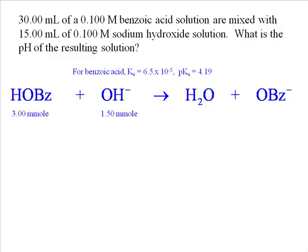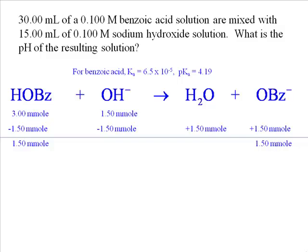If we mix these two things together, the sodium hydroxide is our limiting reactant, so it is completely consumed. It takes with it the exact same amount of benzoic acid, since it's a one-to-one reaction, and forms 1.5 millimoles each of water and benzoate ion. Tallying this up, we end up with a solution that contains 1.5 millimoles of benzoic acid and 1.5 millimoles of benzoate ion.